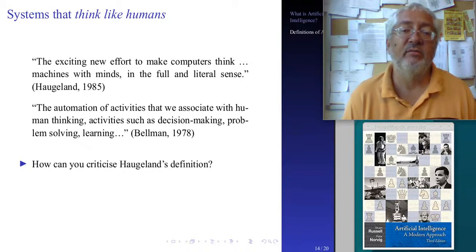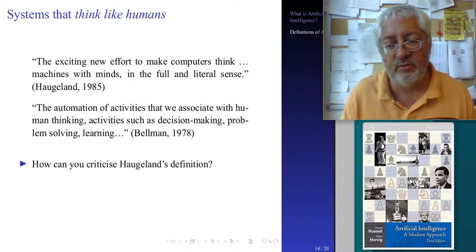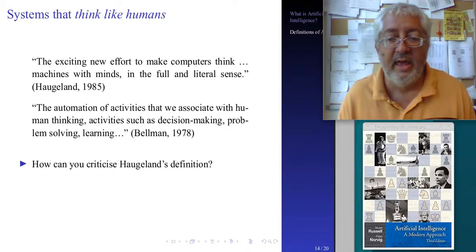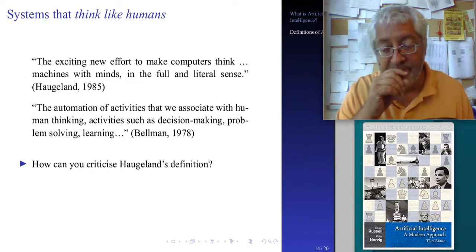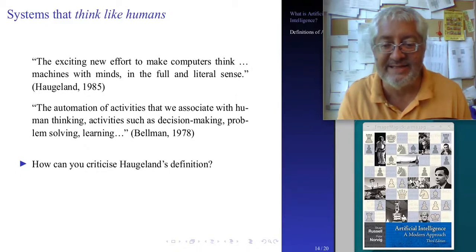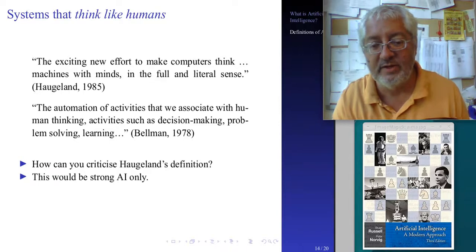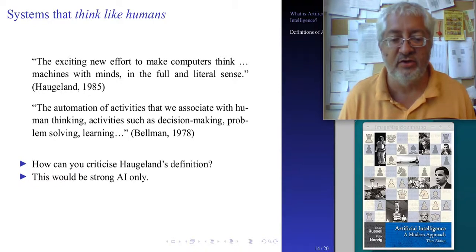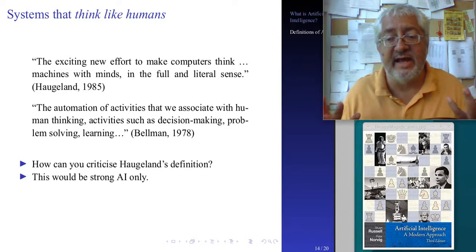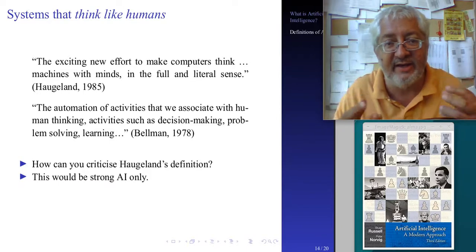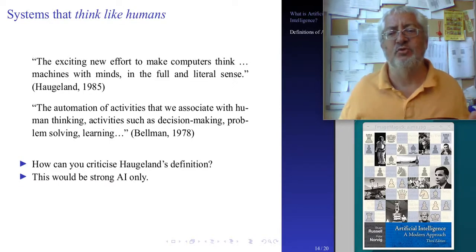How can we criticize the first definition? The problem is clearly that this is not about creating AI in any practical sense — this is about creating machines with minds in the full and literal sense. So what he is talking about here is only strong AI, not weak AI. This is an unachievable goal, for the moment, to create a machine with — in the full and literal sense — a mind. That doesn't seem to be something we know how to do.